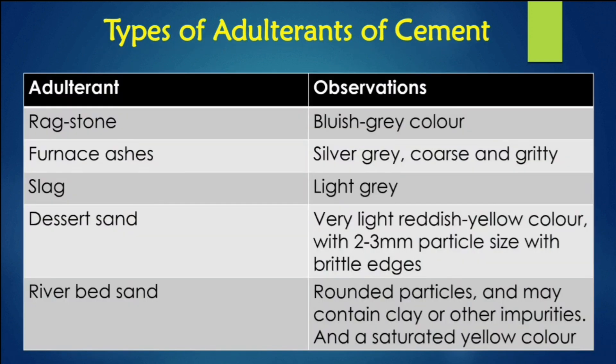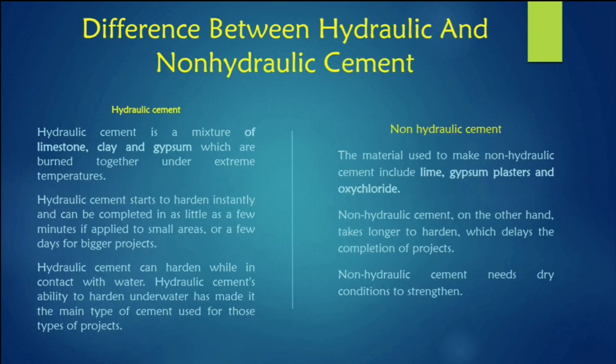The types of adulterants in cement are: first, drag stone — bluish gray in color; second, furnace ashes — silver gray, coarse and gritty; third, slag — light gray in color; fourth, laser sand — very light red or yellow color, within total 3 mm particle size, with brittle edges; and fiber bed — rounded particles that may contain clay or other impurities and are saturated yellow in color.